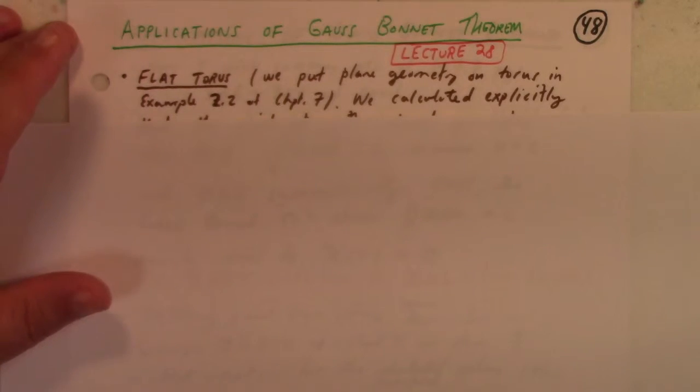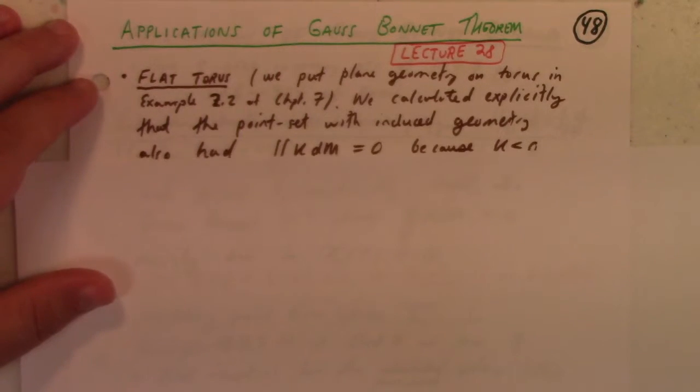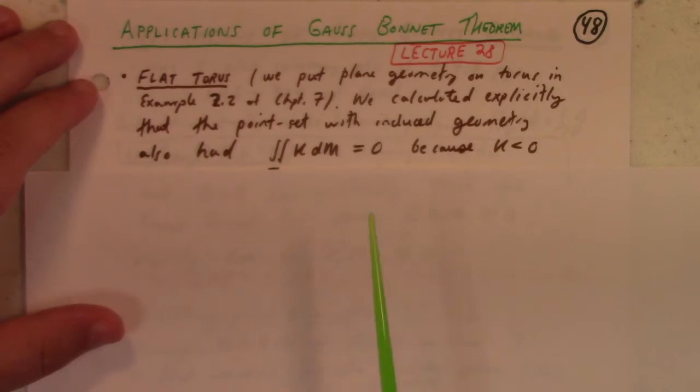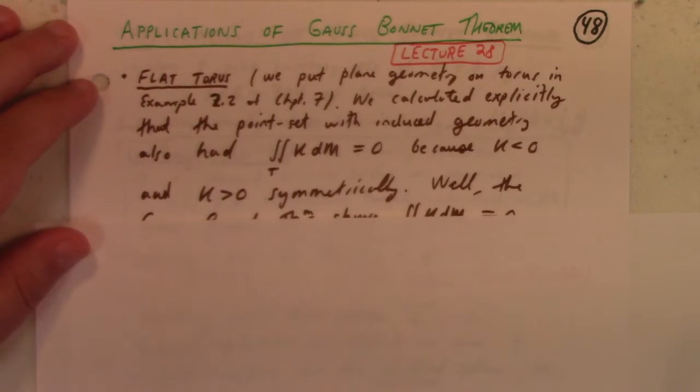If we put geometry on the torus, we calculated explicitly that the point set with induced geometry had total curvature zero because the Gaussian curvature was negative on the inner part of the torus and positive on the outer part, symmetrically distributed from minus π/2 to π/2.